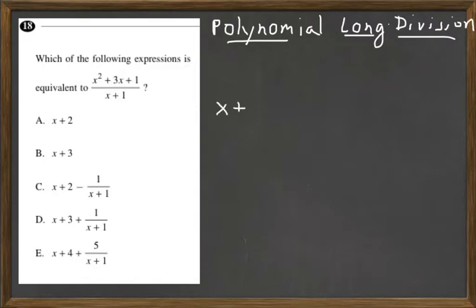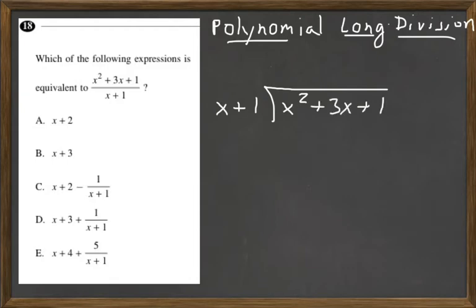We've got x plus 1 going into x squared plus 3x plus 1. What we're worried about is whatever the highest degree of the polynomial is. So, how many times does x go into x squared, the highest one there? That would be 1 time. So we'd have 1x, and 1x times x is x squared.